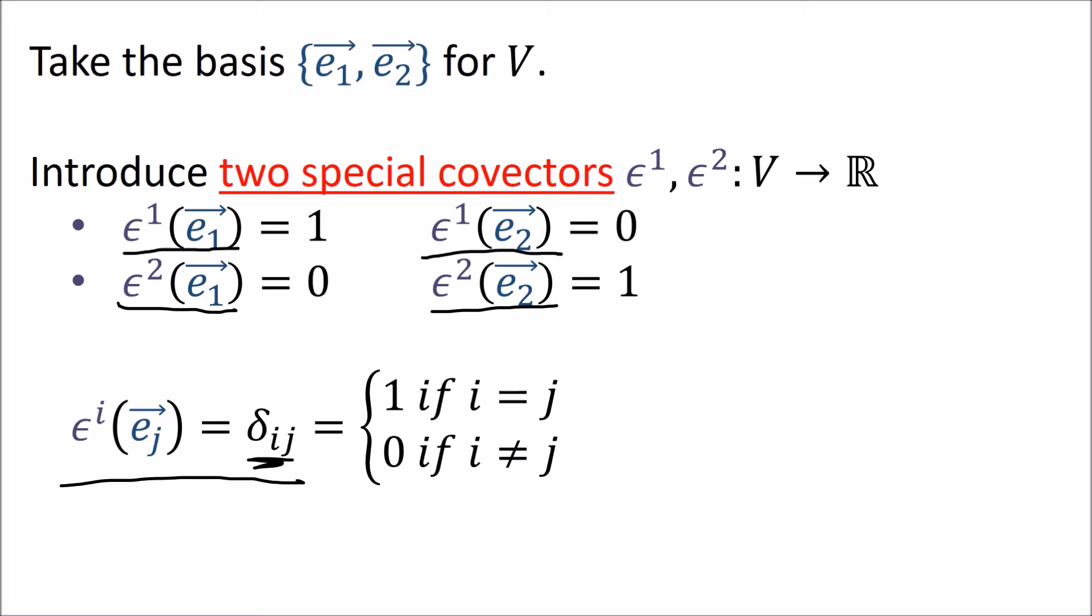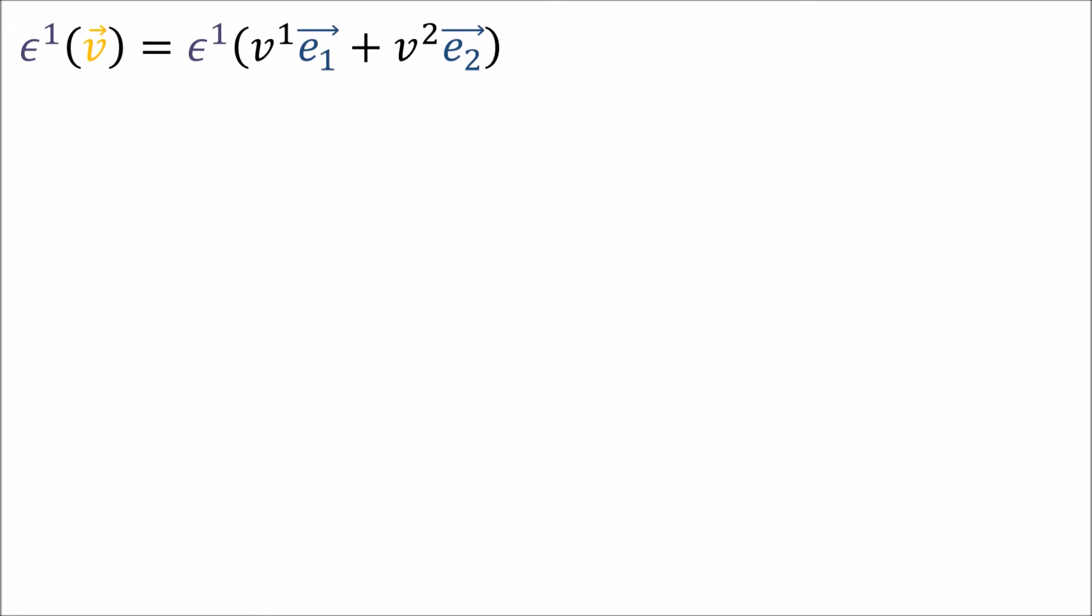What do these covector epsilons actually look like as stacks of lines? To find out, let's apply them to a vector. Here's epsilon 1 acting on some vector v, and of course we can write v as a linear combination of basis vectors e₁, e₂. Since covectors are linear, we can add and scale the inputs or add and scale the outputs and get the same answer. We can bring the addition and scaling numbers outside the function like this.